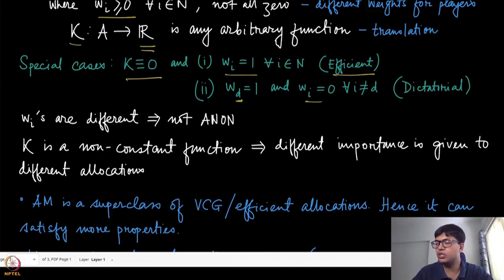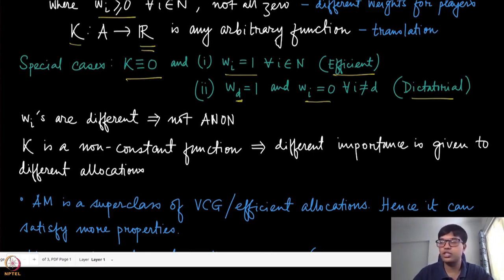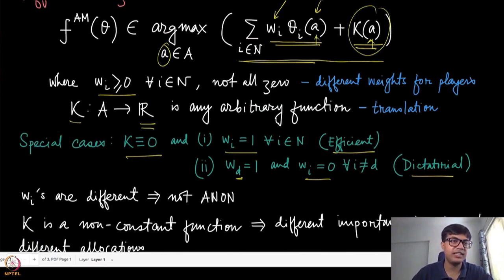Similarly, we can have a very distinguished agent called the dictator, whose weight is exactly equal to one and for all other agents the weights are equal to zero. In that case we are just picking the most favorite allocation of that dictator and not looking at the valuations of any other agents. This is the usual dictatorial mechanism, and both these cases are special cases of the affine maximizer — the affine maximizer is truly a superclass of all these mechanisms.